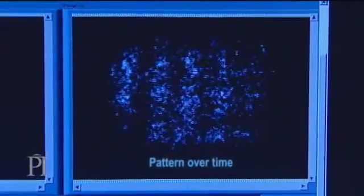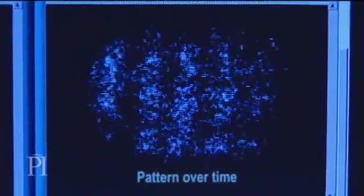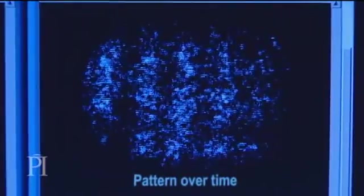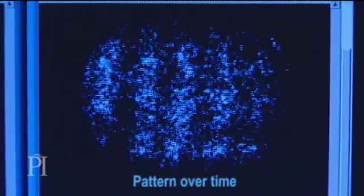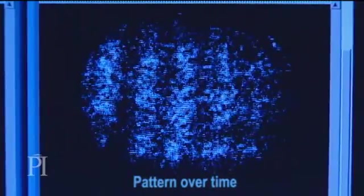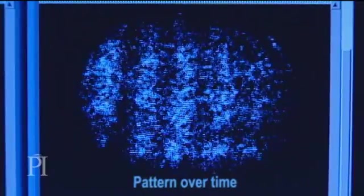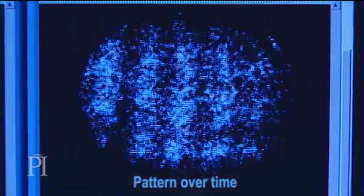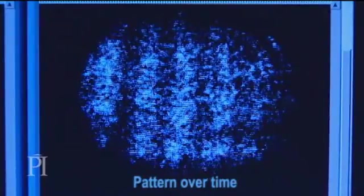So individual electrons behave like particles in arriving at specific spots on the screen. They also seem to behave like waves in building up an interference pattern over time. This shows that electrons have a dual nature. Physicists call this nature the wave-particle duality.